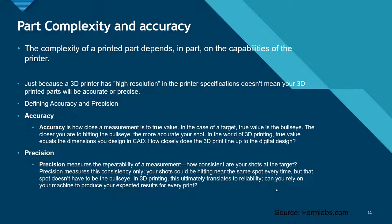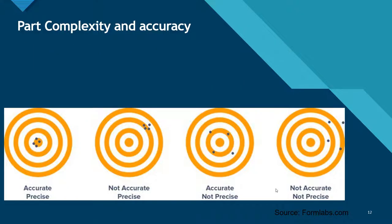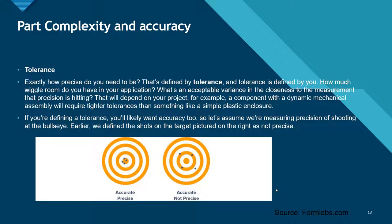Precision measures the repeatability of a measurement — how consistent your shots are to the target. Precision measures consistency only; your shots could be hitting near the same spot every time, but that spot doesn't have to be the bullseye. In 3D printing, this ultimately translates into reliability: can you rely on your machine to produce your expected results for every print? As with all manufacturing methods, we would like our method to be both accurate and precise. Tolerance determines how precise you need to be.